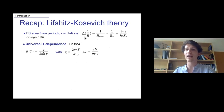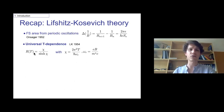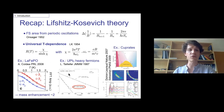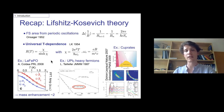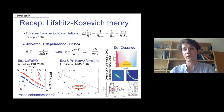Here's a one-slide recap on Lifshitz-Kosevich theory: the frequency of oscillations is proportional to the Fermi surface area, and there is a universal temperature dependence calculable perturbatively within a Fermi liquid description. The key point is that the decay of the amplitude as a function of increasing temperature is governed by the effective mass of your quasiparticles. For example, in the heavy fermion system UPt₃ you can directly see in quantum oscillations a hundred-fold increase of the effective mass.